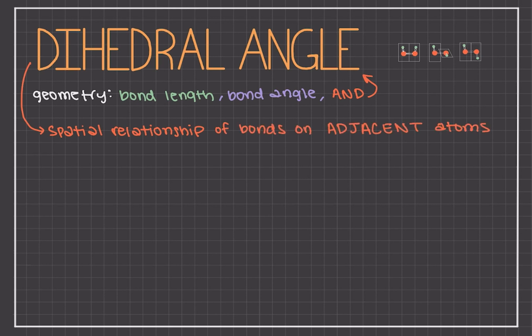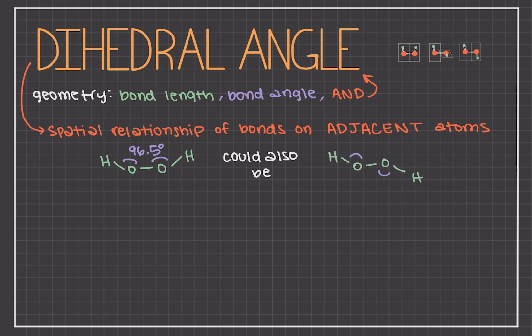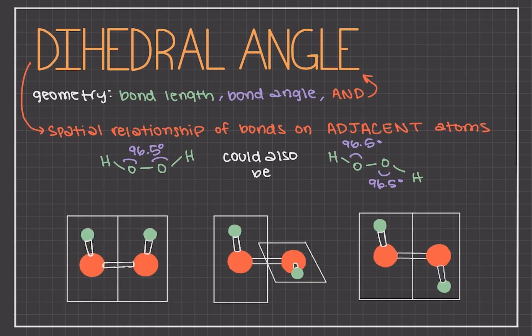To demonstrate this concept we will consider the molecular illustration of hydrogen peroxide, or HOOH. Both of the O-H bonds are at angles of 96.5 degrees, but we need to know the dihedral angle to completely describe the shape of the hydrogen peroxide molecule. To understand this further, let's draw out the molecule with two intersecting planes, where each plane has one of the oxygens and the hydrogen it's bonded to. The angle between these two planes is what's called the dihedral angle, sometimes also known as the torsion angle.